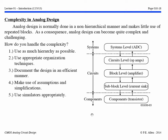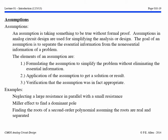An important aspect of the analog IC design skill set is the ability to make an assumption — taking something to be true without formal proof. The purpose is to simplify the analysis and separate essential from non-essential information. The elements of an assumption are: formulating the assumption to simplify the problem without eliminating essential information, applying the assumption to get a result, and verifying that the assumption was in fact appropriate. Examples include neglecting a large resistance in parallel with a small resistance, the Miller effect to find a dominant pole, and finding roots of a second-order polynomial assuming they are real and separated.